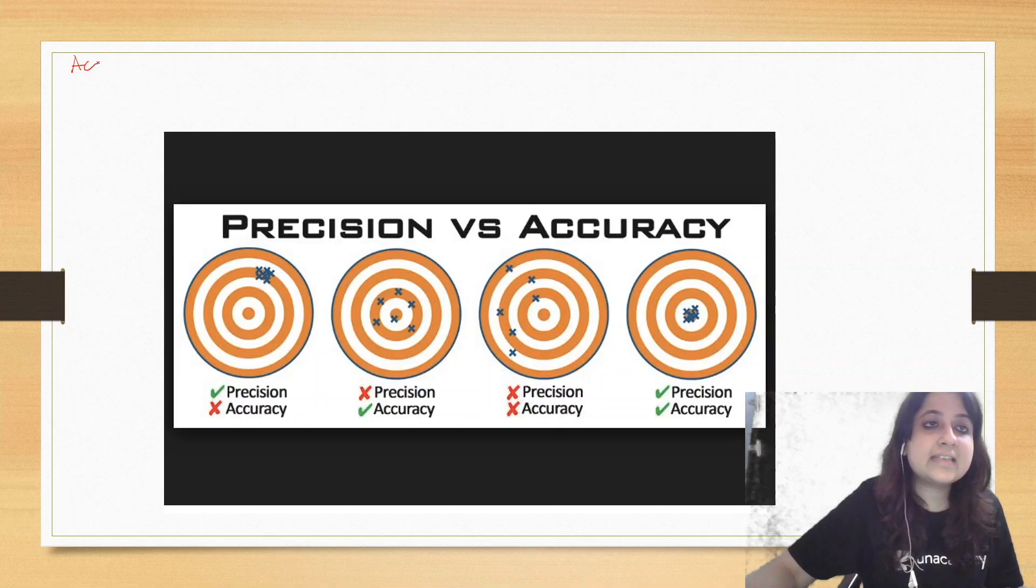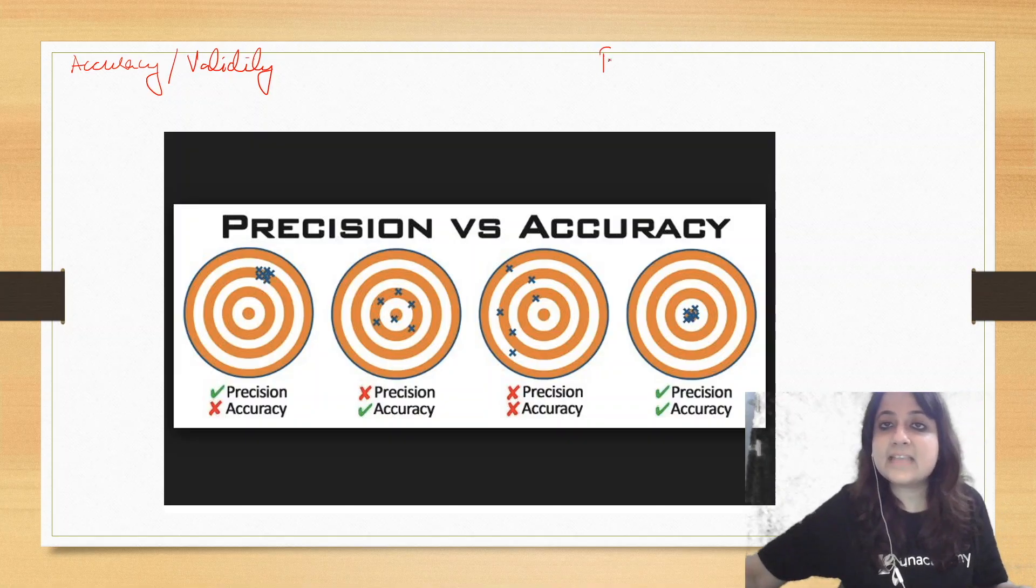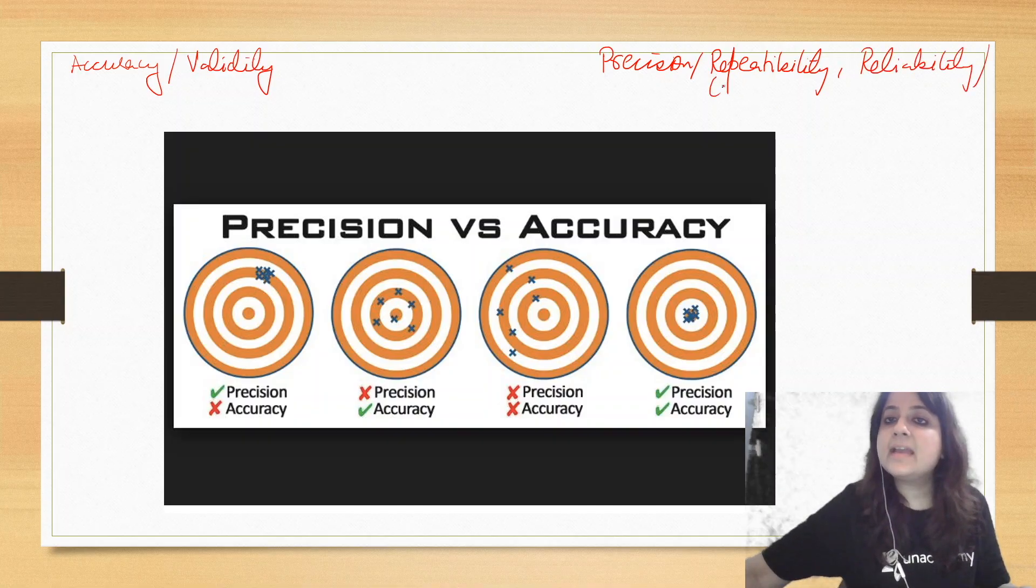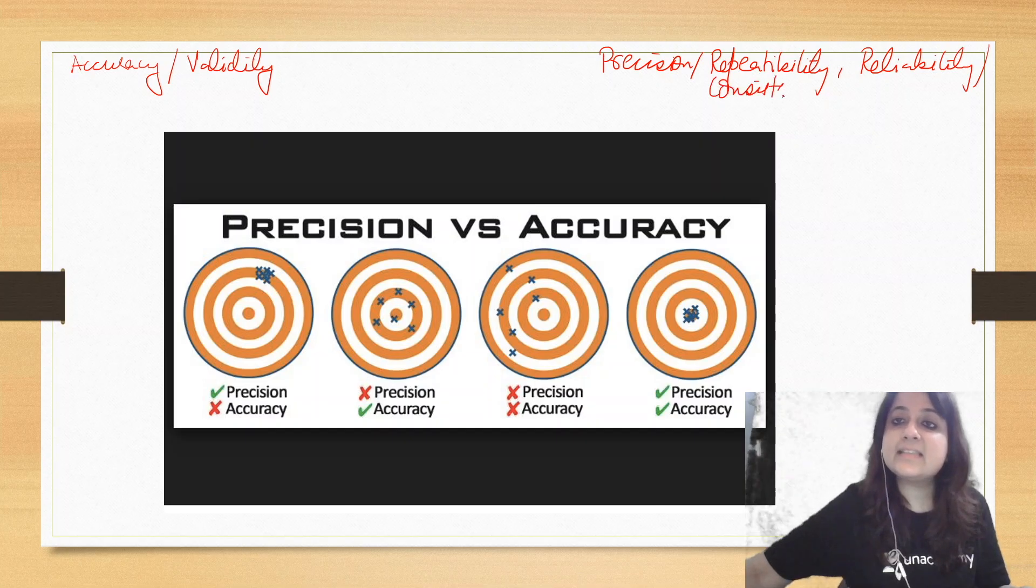There are different terms for accuracy. It is also known as validity. And let us write this side, precision. Precision is also known as repeatability, reliability, or it is also known as consistency.